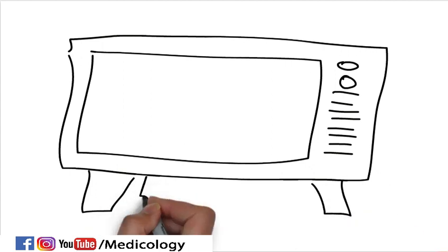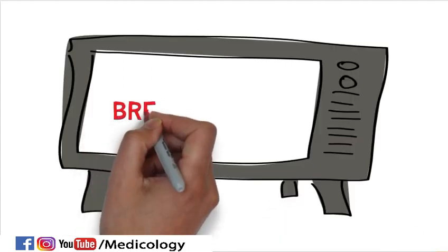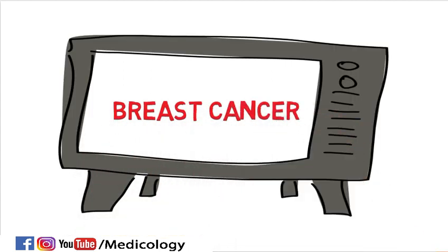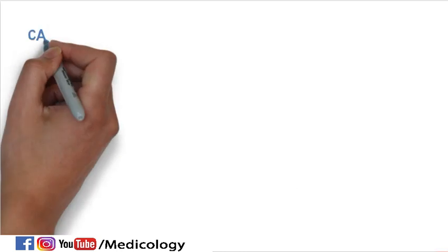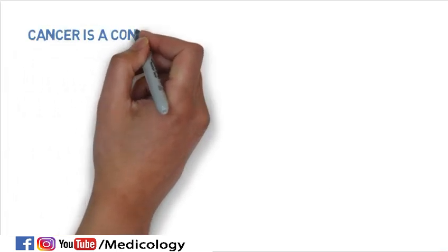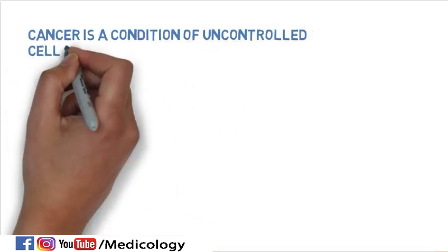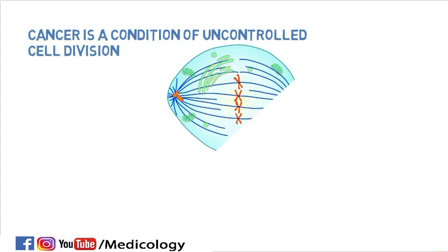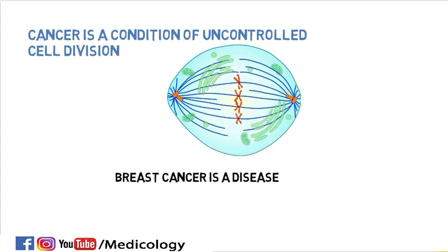In this video I am going to describe breast cancer. Cancer is a condition of uncontrolled cell division. Hence breast cancer is a disease in which cells in the breast grow out of control.